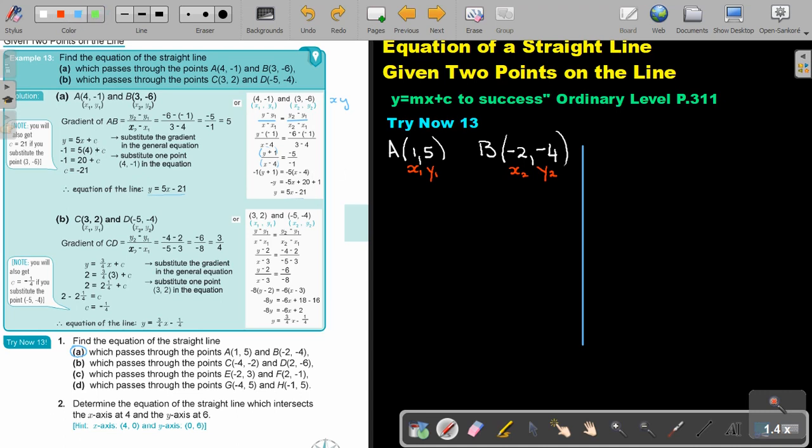Now, if I do this method first, I'm first going to get the gradient. Can you remember? Difference in y over difference in x. So the difference in y, it's going to be negative 4 minus 5, and it's going to be negative 2 minus 1. That's going to give me an answer of negative 9 over negative 3, and that is going to give me an answer of 3. So this is going to give me 3. Then I'm just going to put it in. I start again with the equation: y equals mx plus c. Now I put in that 3.